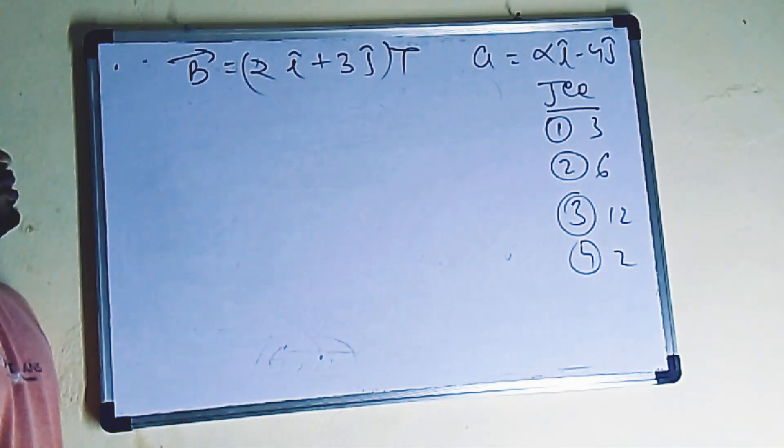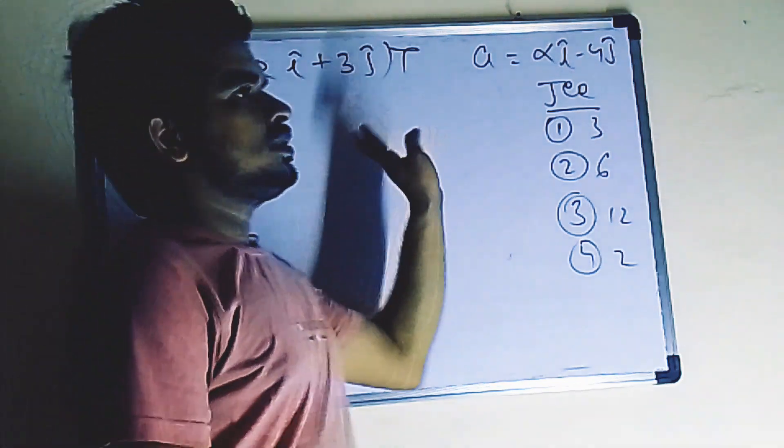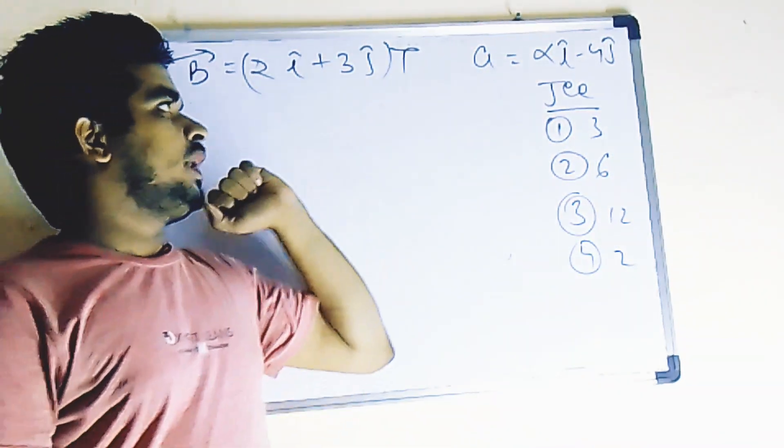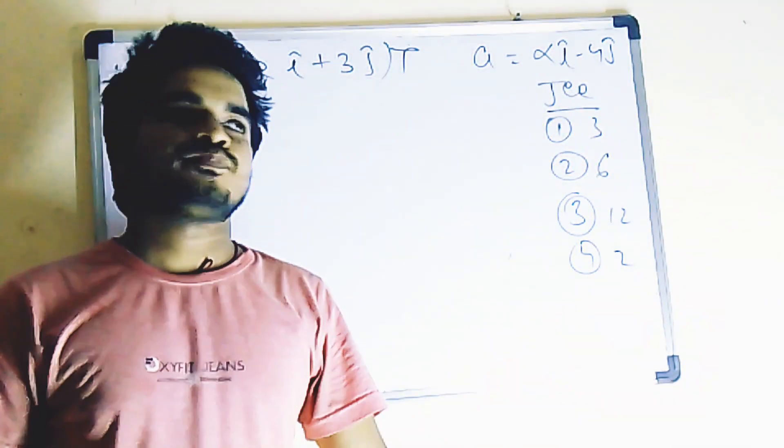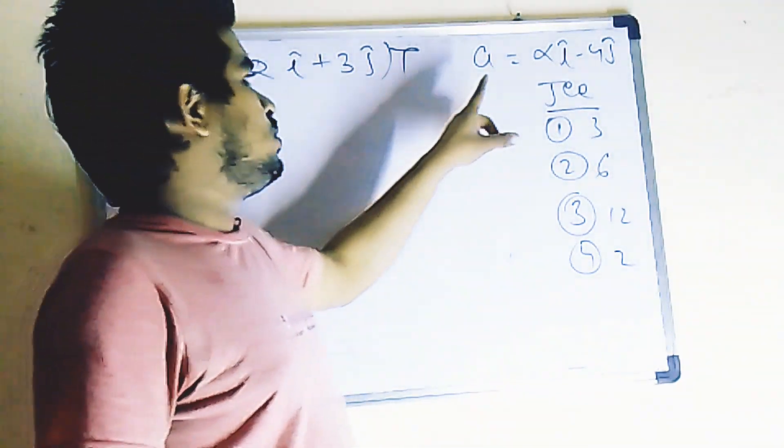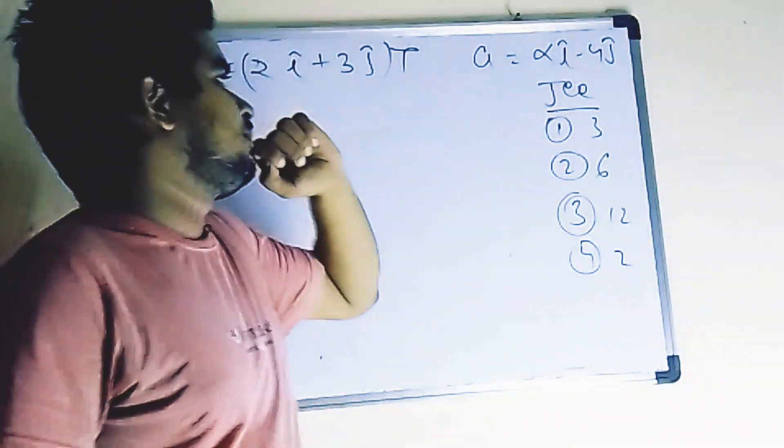See this question. In this question, a uniform magnetic field is given: B = 2i cap plus 3j cap Tesla. And acceleration is given: A = alpha i cap minus 4j cap. The question is asking you the value of alpha. Options are 3, 6, 12, 2.